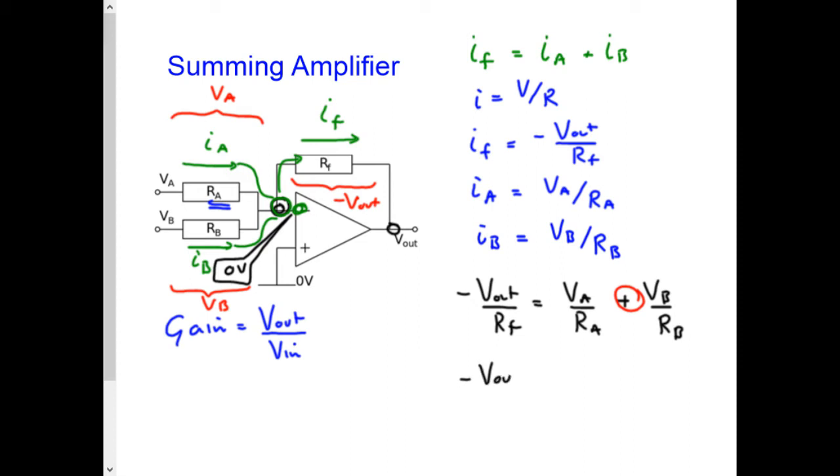So minus Vout is equal to, taking the RF value and sticking it up on top of these fractions, VA times RF over RA plus VB times RF over RB. RF over RA represents the gain of input A, and RF over RB represents the gain of input B.